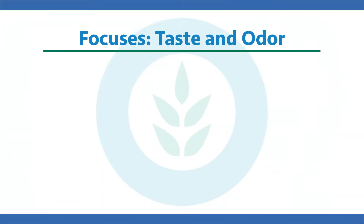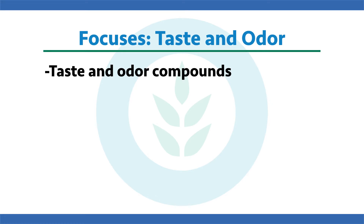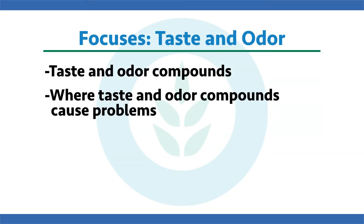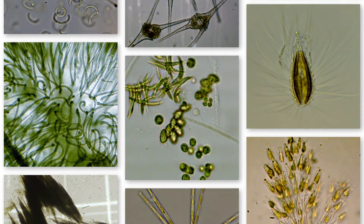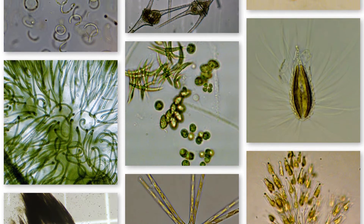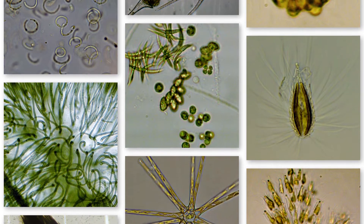Specifically, we're going to cover three main areas today. First, taste and odor compounds — what are they, how many different types exist, and which algae produce them. Next, where taste and odor compounds cause problems in water resources. And lastly, an overview of what you can do about it — how you identify and solve those issues. When we discuss taste and odor compounds today, we're specifically talking about compounds that organisms — algae and cyanobacteria — produce, that we can detect with our nose and taste buds at very, very low levels. It's important to note there are many other bacteria and chemical-based sources like sulfur, iron, and manganese, but we're focusing on algae and cyanobacteria.